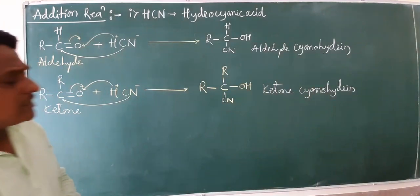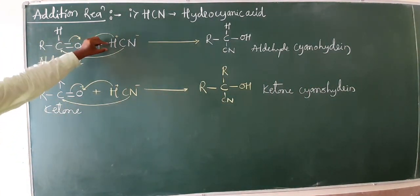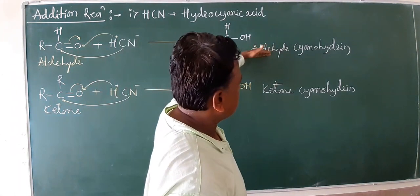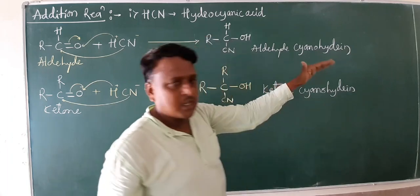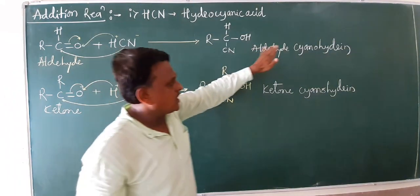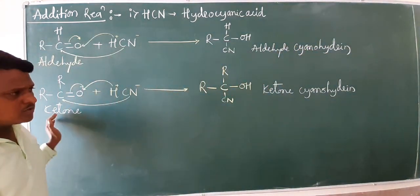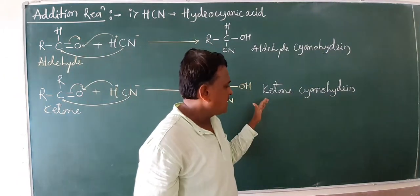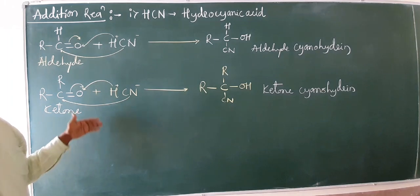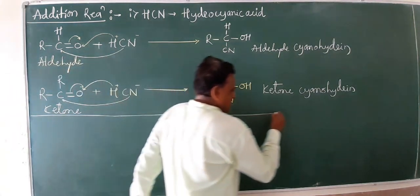This is a very simple addition reaction. When aldehyde or ketone reacts with hydrocyanic acid, the corresponding product formed is aldehyde cyanohydrin or ketone cyanohydrin. If you use acetaldehyde you form acetaldehyde cyanohydrin, and if you use acetone you form acetone cyanohydrin. These are the two simplest reactions mentioned in the syllabus.